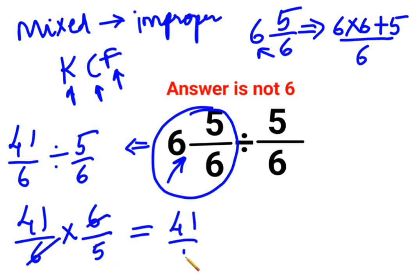You are left with 41/5. Now, this is an improper fraction. Because whenever you have a numerator greater than a denominator, it is called an improper fraction.